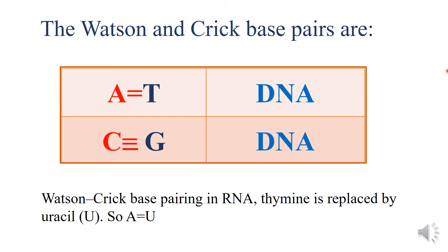We all know that the Watson and Crick base pairing rules are that adenine pairs with thymine with the help of two hydrogen bonds in DNA, whereas cytosine pairs with guanine with the help of three hydrogen bonds in DNA. In the case of RNA, thymine is replaced by uracil, so adenine pairs with uracil with the help of two hydrogen bonds in RNA.